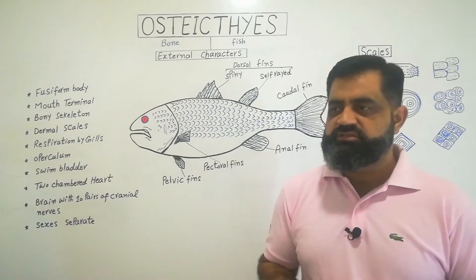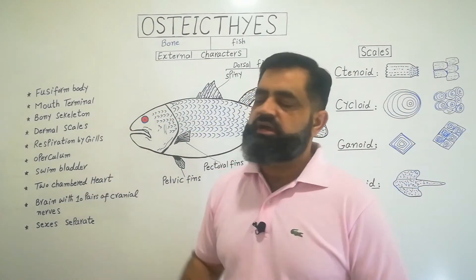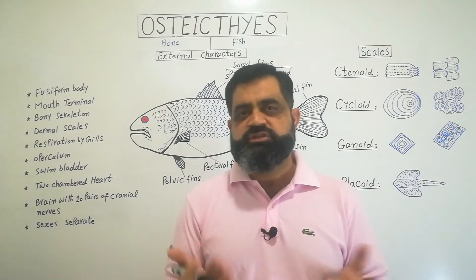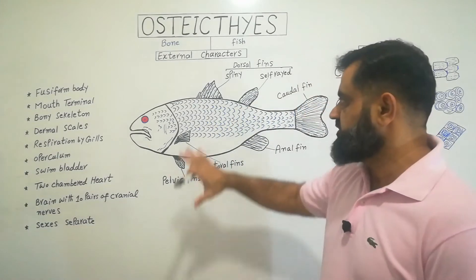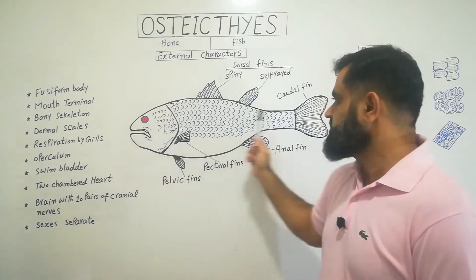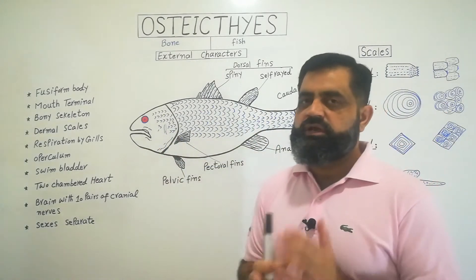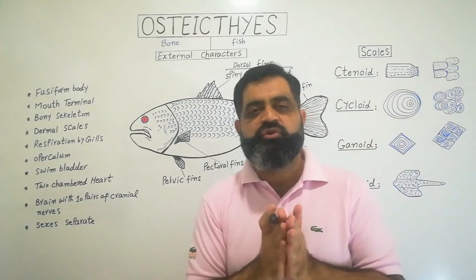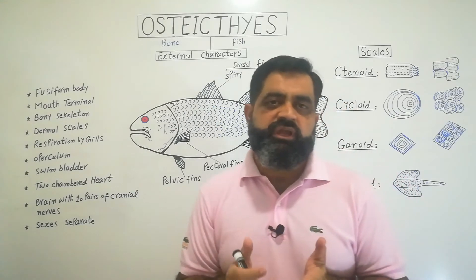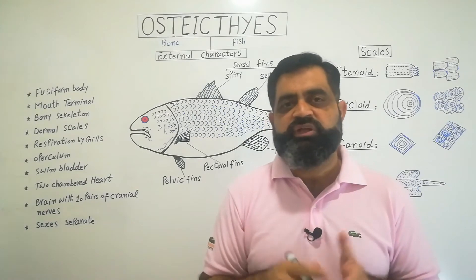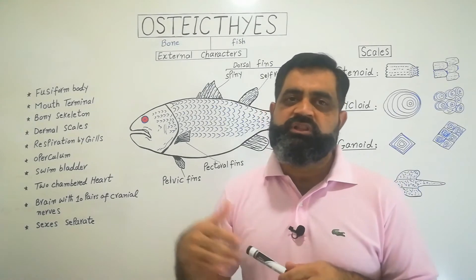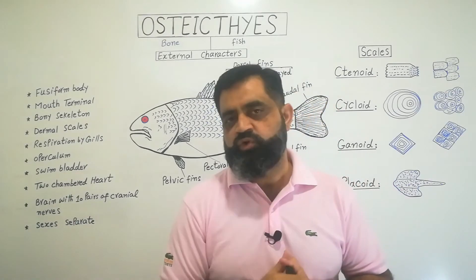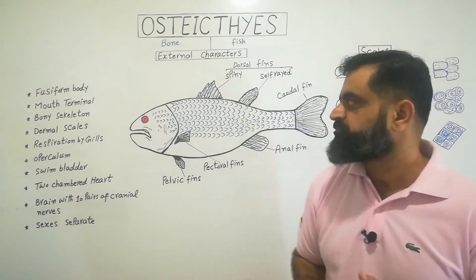The first general characteristic is that their body is fusiform. Fusiform means spindle-shaped — the body is narrower at the anterior and posterior ends and wider at the central part. This form is best for locomotion in water and air, as seen in boats, ships, and aeroplanes. Moving at high speed, this shape minimizes friction from water and air.